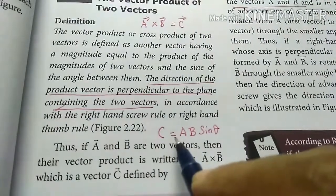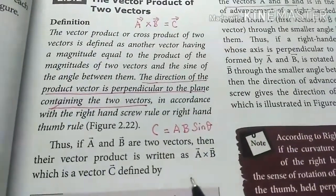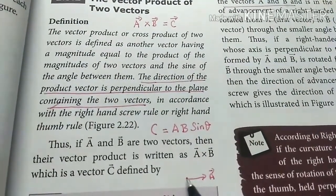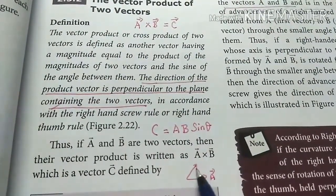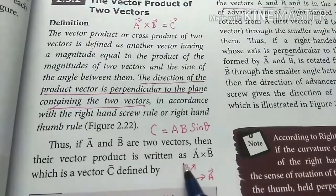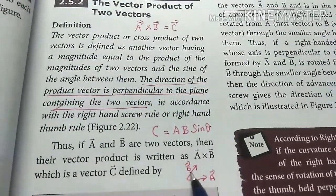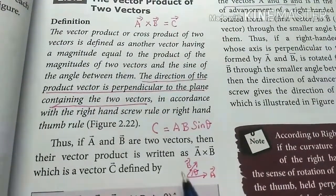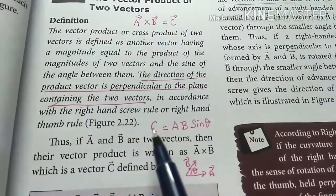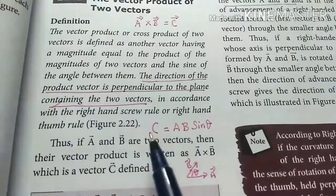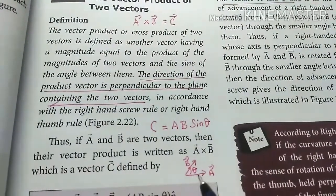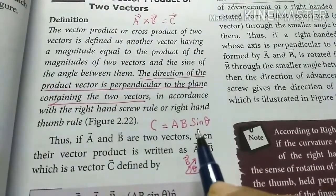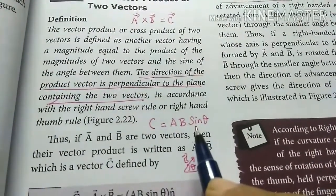Two vectors are given with the sine of the angle between them. The resultant vector is the product of the magnitudes of the two vectors and the sine of the angle between them.